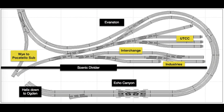Two previous versions of Evanston were too small to be operationally interesting. So I extended the peninsula on which Evanston is located by 18 inches and drew up this third track plan. Then I reconstructed Evanston based on this track plan. Will this be my final version of the track work at Evanston? I don't know, but I certainly hope so.